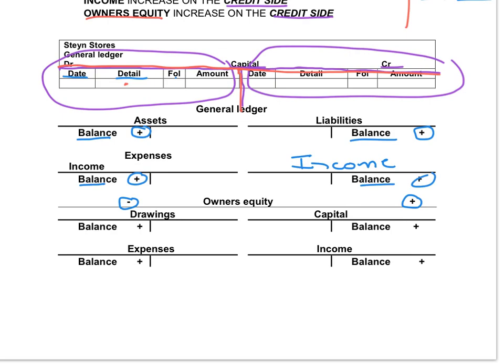We open two accounts for the owner: the capital account and the drawings account. When the owner contributes capital, he puts more money into the business, so his owner's equity will increase because the business owes him more money or his interest in the business increased. If he takes goods or money out of the business, we will debit the drawings account. In the drawings account the balance will be on the debit side and drawings in the ledger account will increase on the debit side. When the owner takes money or goods for himself, the business owes him less money, so the owner's equity will decrease.